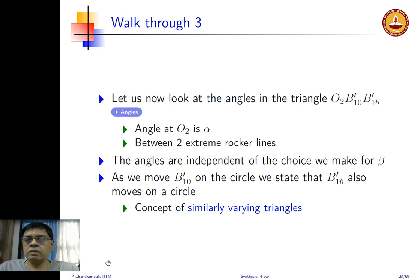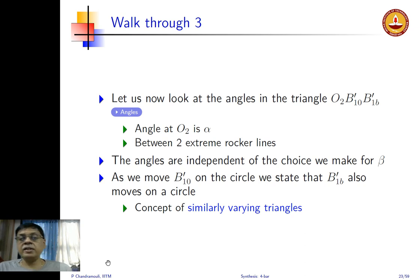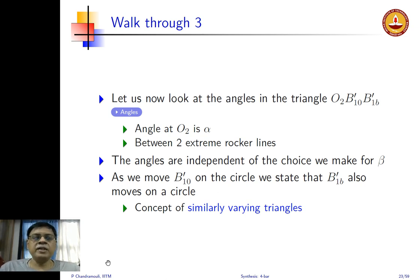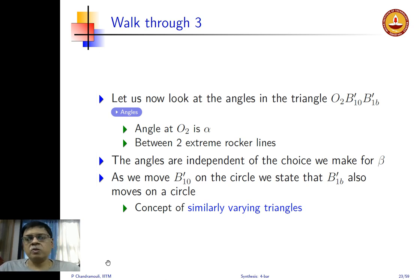The angles in triangle O2–B'10–B'1b are independent of the choice made for beta. Furthermore, as B'10 moves on a circle, B'1b also moves on a circle. This is the concept of similarly varying triangles — something new beyond the similar triangles you would have studied in high school geometry.